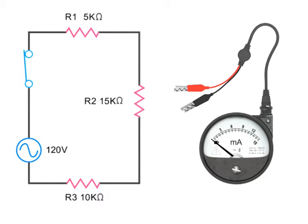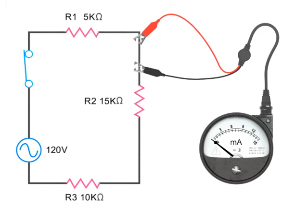Ammeters are used to measure current in a circuit. They are connected in series with the components to be measured. This means that the ammeter is placed in line with the circuit to be measured.